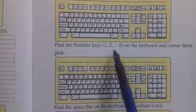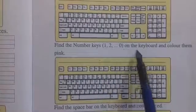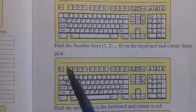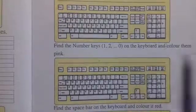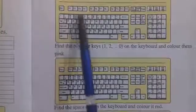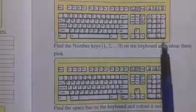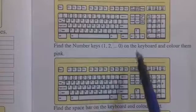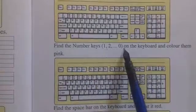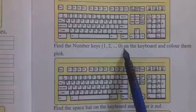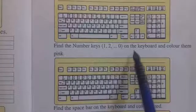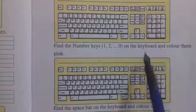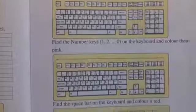Find the number keys one to zero on the keyboard and color them pink. Number keys keyboard में दो जगह होते हैं — उपर के side में और right side में भी number keys होते हैं। Find the number keys one to zero — one, two, three, four, five, six, seven, eight, nine, zero — यह keys देखनी हैं और उनको pink color देना है।